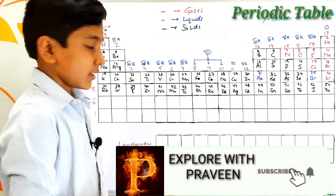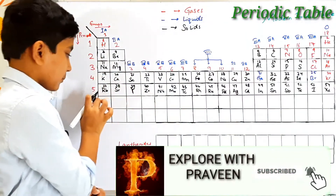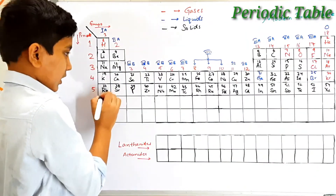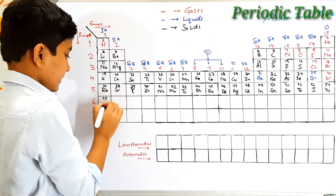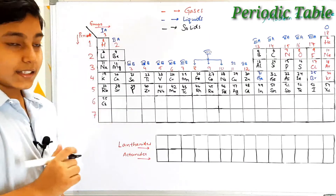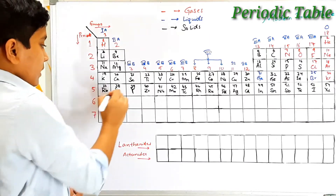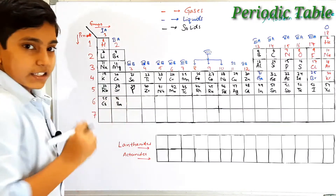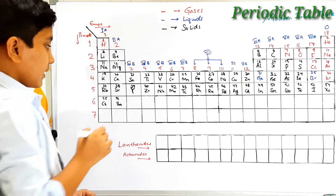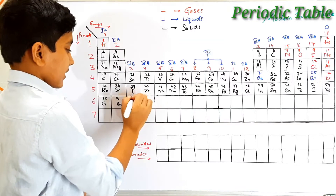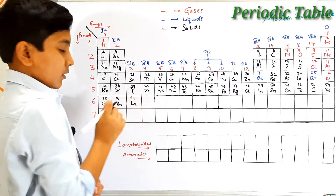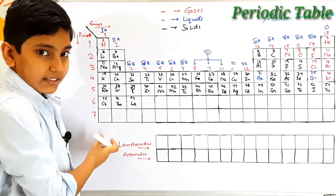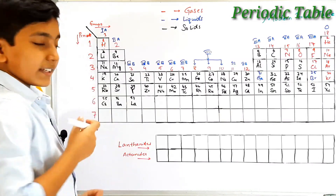The sixth period begins with atomic number 55 which is cesium — its symbol is Cs. Atomic number 56 is barium — its symbol is Ba. Then atomic number 57 is lanthanum. After lanthanum, the continuation is the lanthanide series, which is named after the element lanthanum.